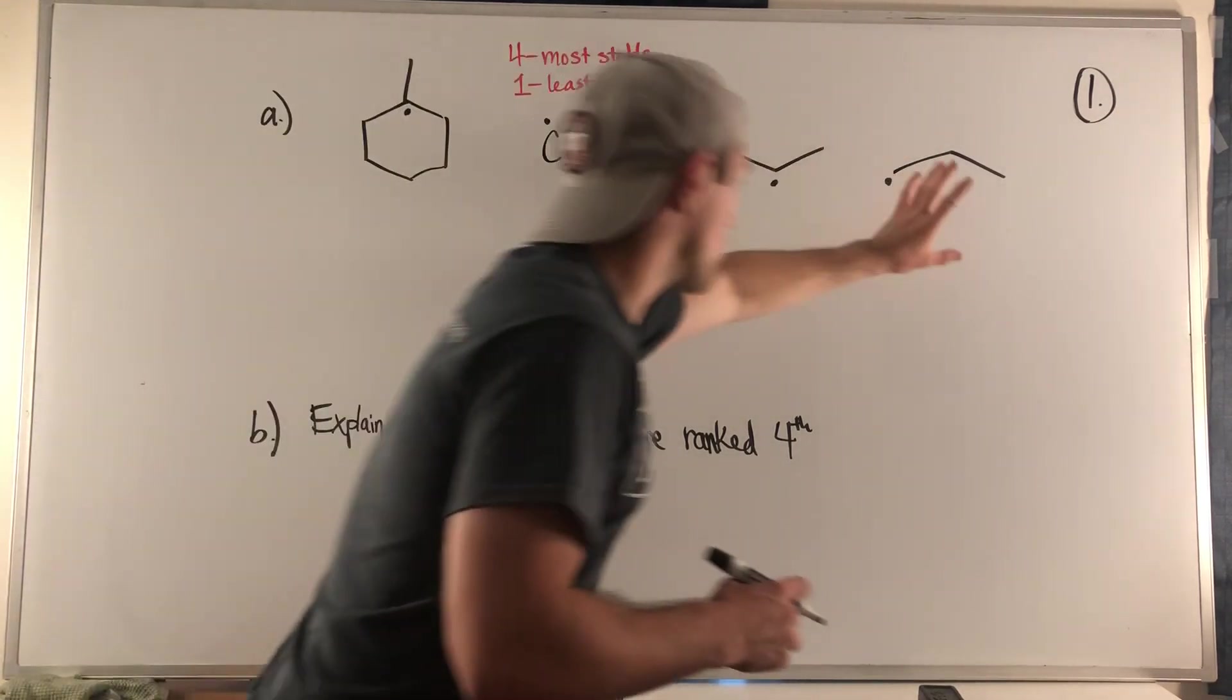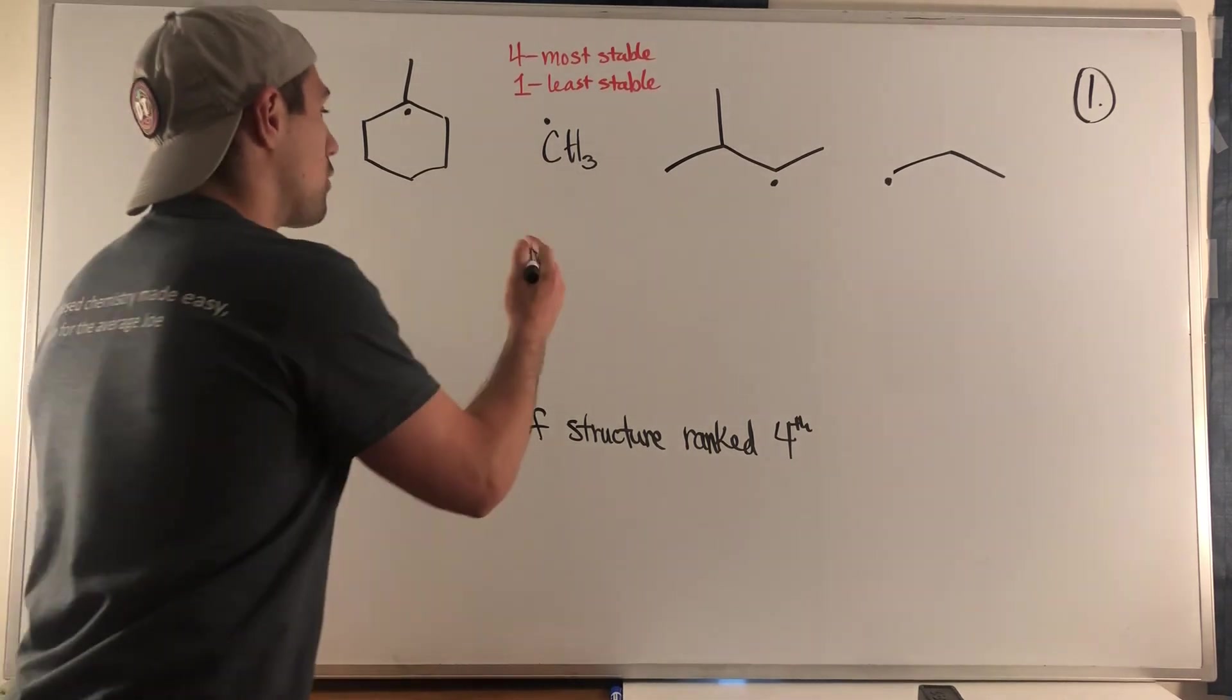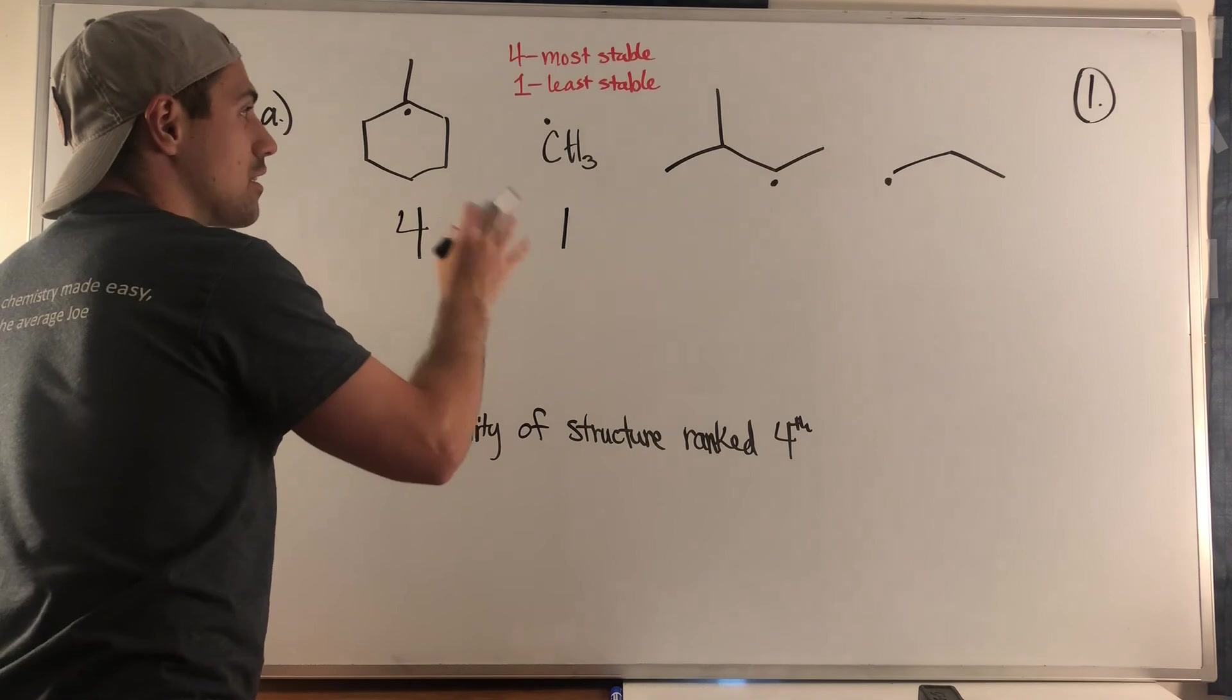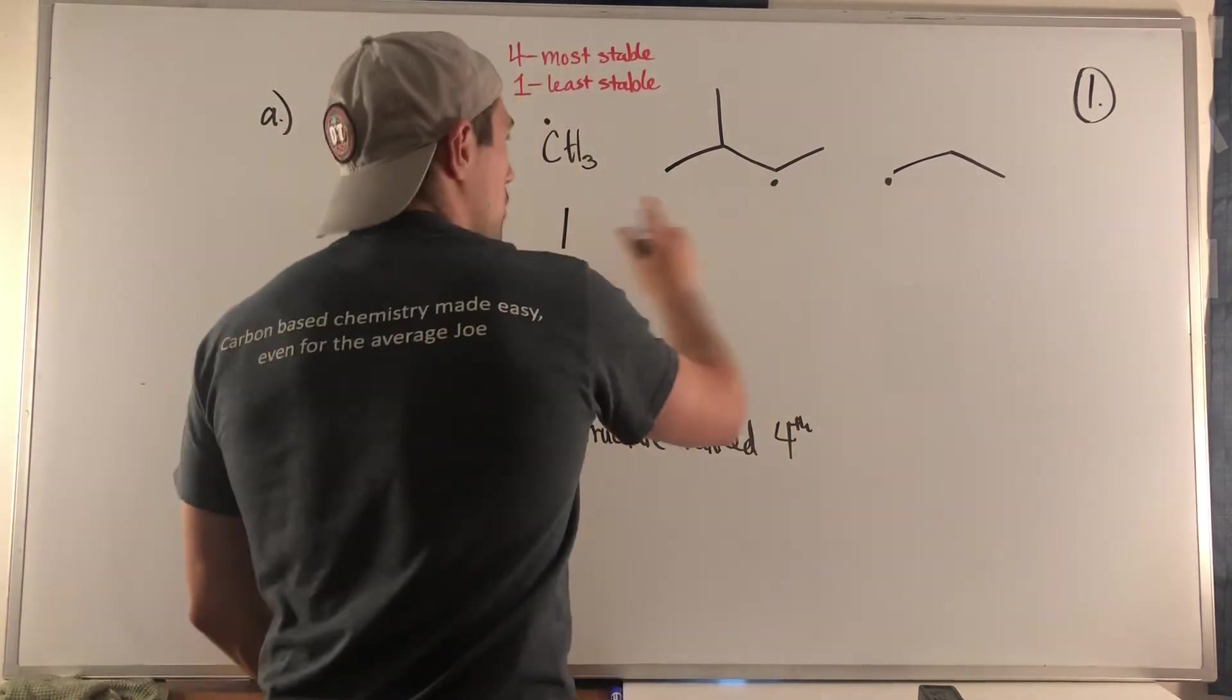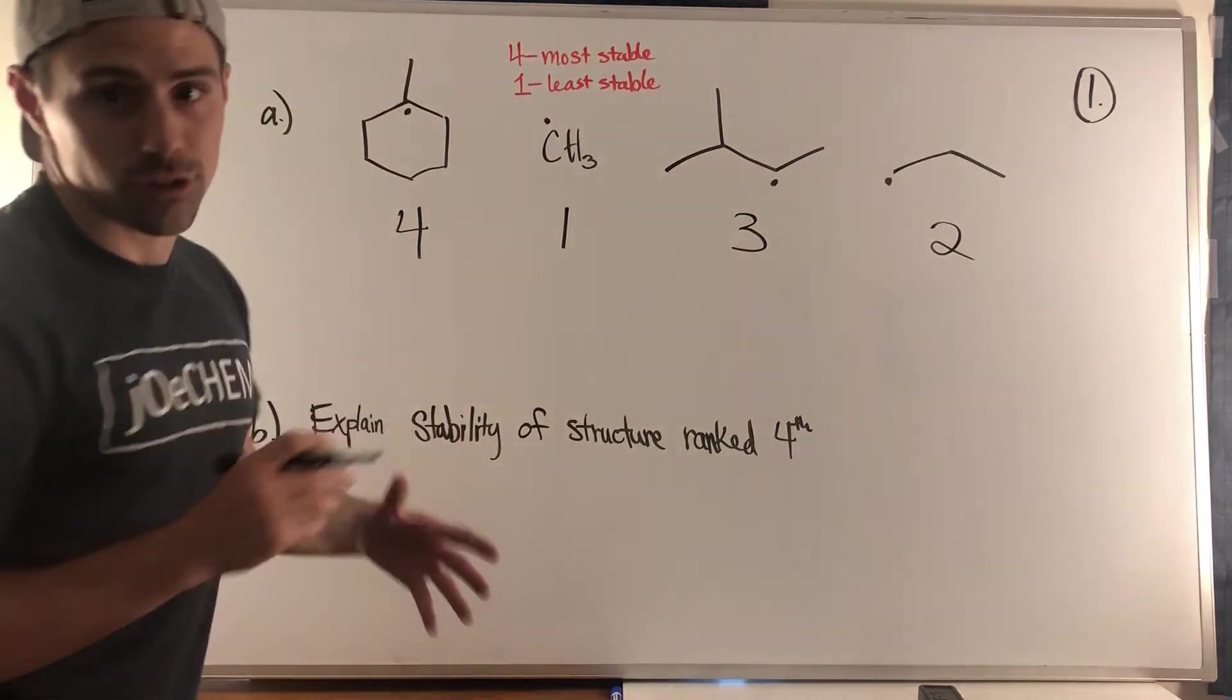So this is pretty easy. This is a methyl carbon, this is a primary carbon, a secondary carbon, and a tertiary carbon. So methyl is the least stable, tertiary is the best out of here, and then of course it goes methyl to primary to secondary to tertiary.